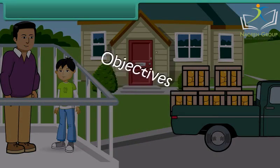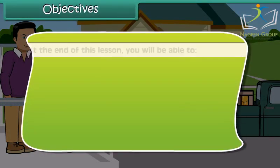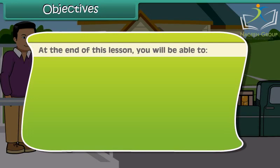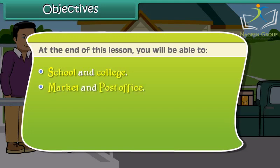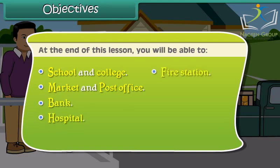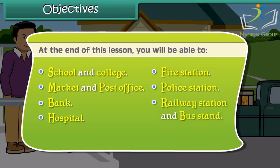Objectives. At the end of this lesson, you will be able to know about neighborhood places such as school and college, market and post office, bank, hospital, fire station, police station, railway station and bus stand.